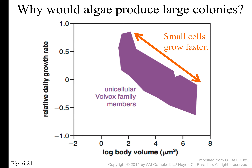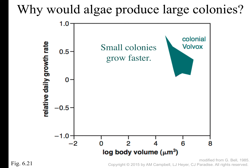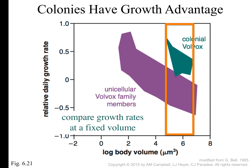Is bigger necessarily better? Small cells can grow faster, so why get big? But if we compare apples to apples and look at cells between 4.4 and 6.4 cubic microns in size, is there an advantage to being in a colony versus being a single cell? When you compare those two groups, it sure looks like the ones in colonies grow faster than the single-cell ones.